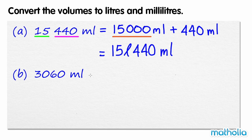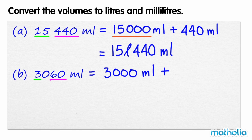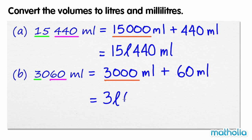We can rewrite 3,060 millilitres as 3,000 millilitres plus 60 millilitres. 3,000 millilitres is equal to 3 litres, so the volume is 3 litres, 60 millilitres.